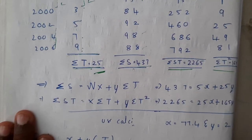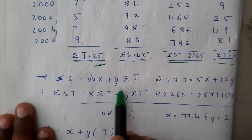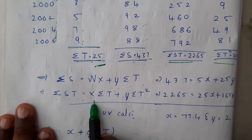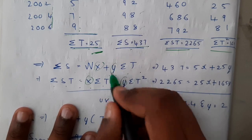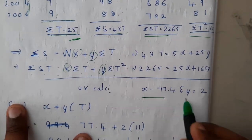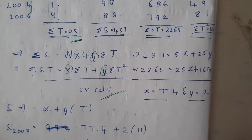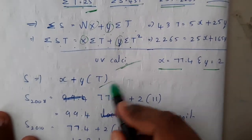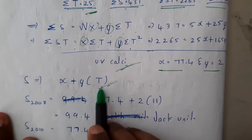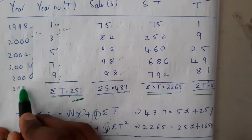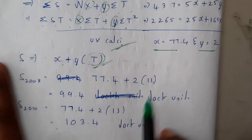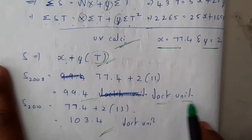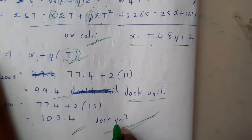Our two equations are Σ S = nx + y·ΣT and Σ ST = x·ΣT + y·ΣT². Substituting the values, x and y are the unknowns — use a calculator for the exam. The final equation simplifies to S = x + yT, where T is the year number. For 2008, T = 11 and for 2010, T = 13. Substituting gives the sales forecast in lakh units for those years.